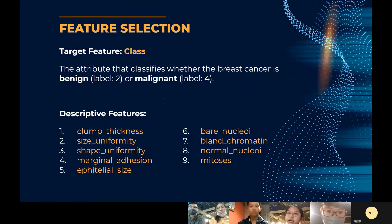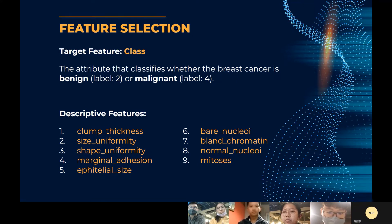Next is feature selection. The target feature we want to predict is the class — whether the breast cancer is benign or malignant. The rest of the attributes will be used as descriptive features, except for the ID attribute, since the sample code number has no effect on predicting the class.